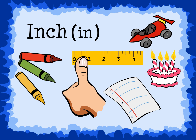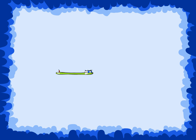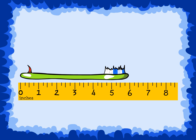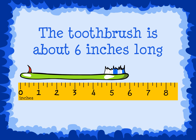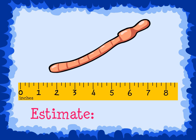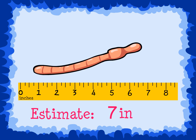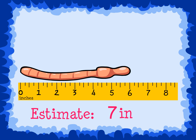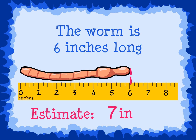Let's measure our toothbrush with inches. Here is the toothbrush and here is a ruler. The ruler shows us that the toothbrush is about 6 inches long. Can you estimate how many inches the worm is? I would estimate the worm is about 7 inches long. Looking at the ruler, we can see that the worm is actually 6 inches long. Our estimate of 7 was very close.